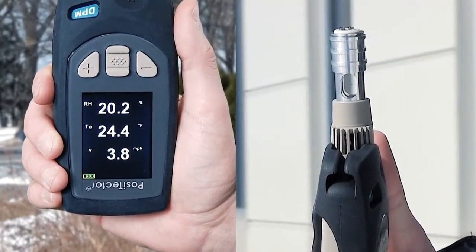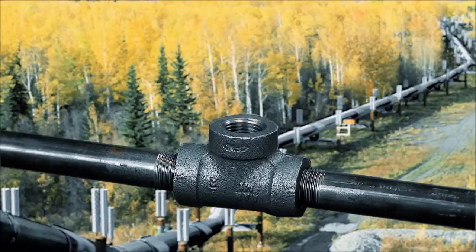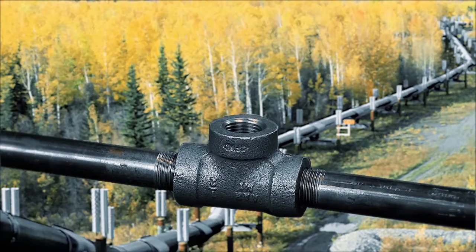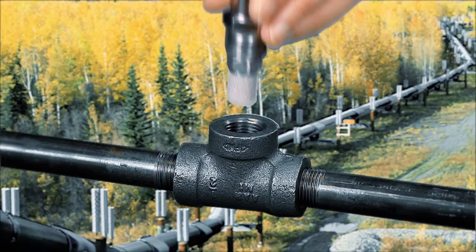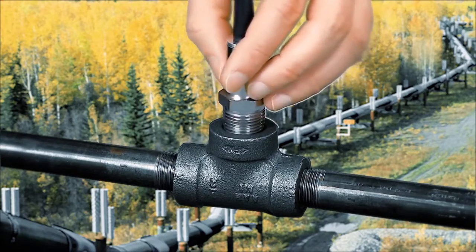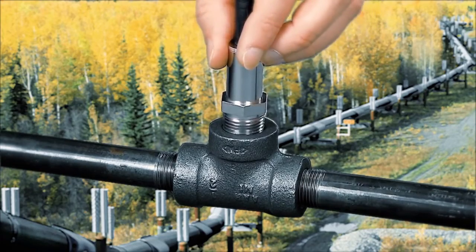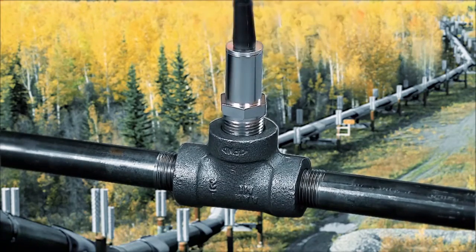The Positector DPM cabled probe with half-inch NPT threads is designed for insertion into tanks or pipelines and can measure ambient temperature, humidity, and dew point at pressures up to 200 psi or 1.3 MPa.